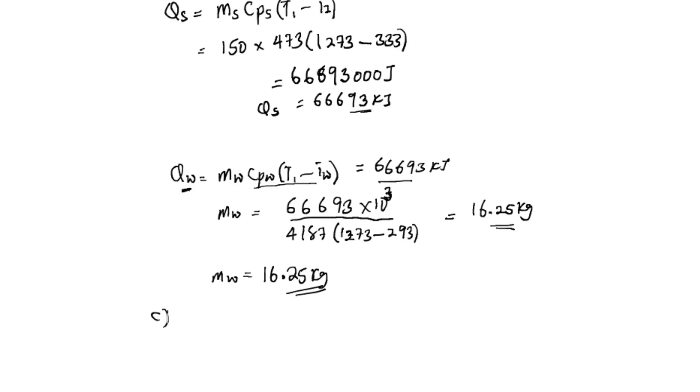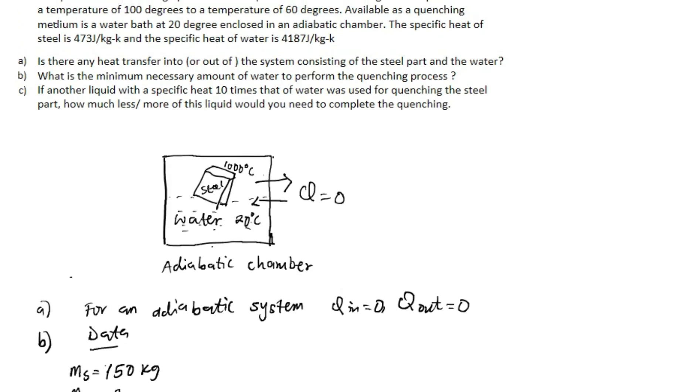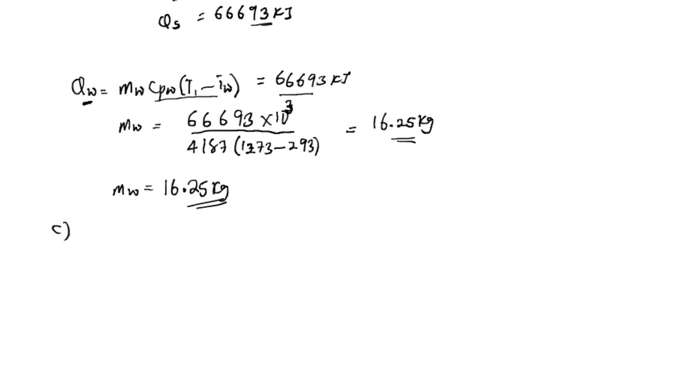Now for part C, if another liquid with a specific heat 10 times that of water was used for quenching the steel part, how much less or more of this liquid would you need to complete the quenching? We are just going to modify the equation. The mass of that unknown liquid is going to be 666,930 divided by 10 times the specific heat capacity of water, which is 4187, times 1273 minus 293.